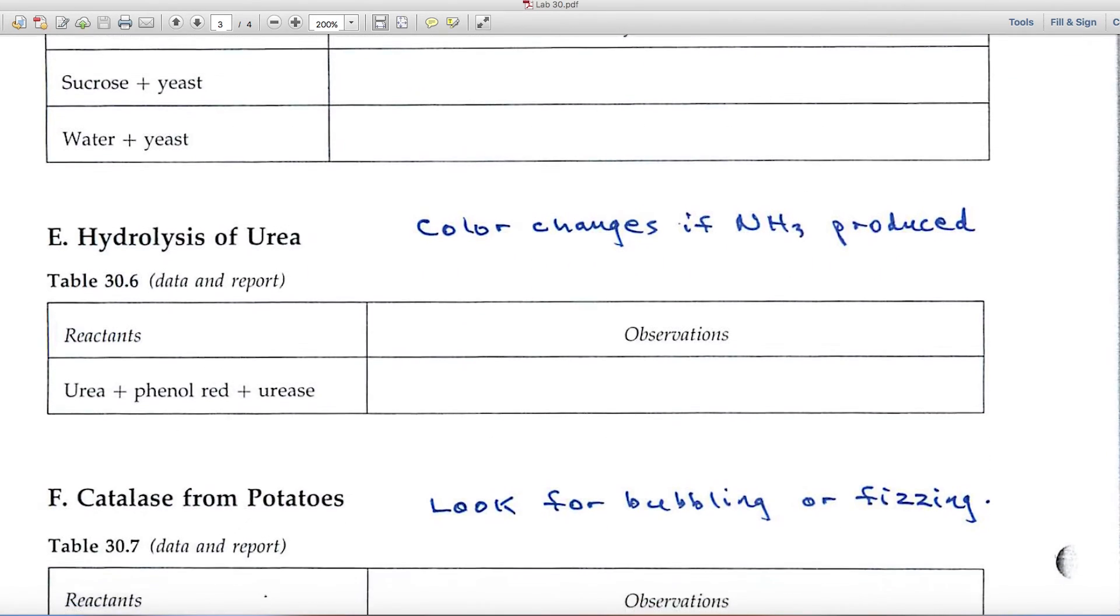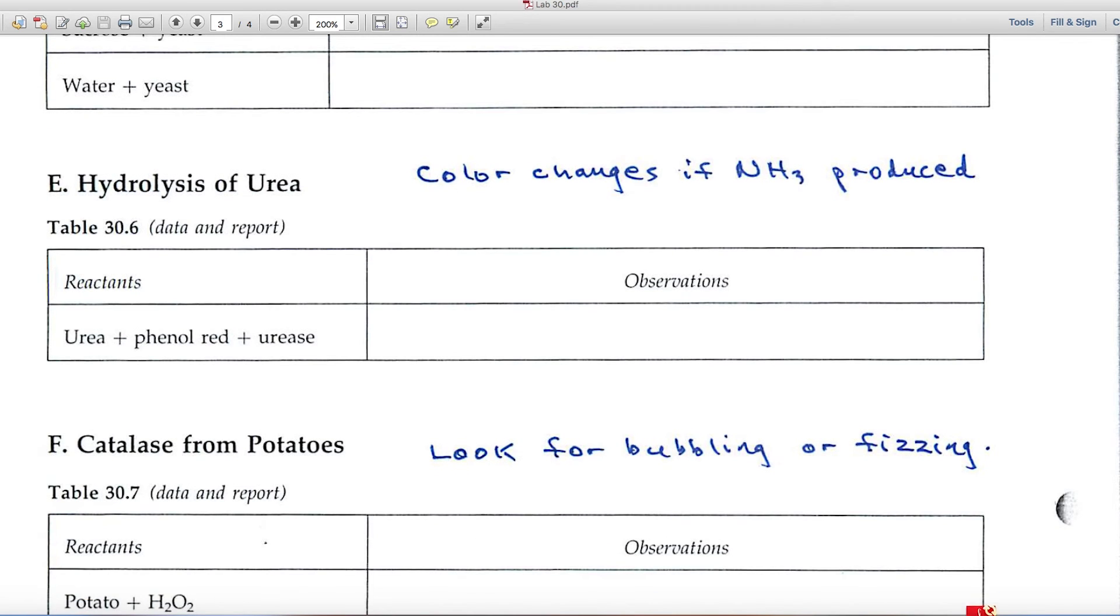Part E deals with the hydrolysis of urea. When urea is hydrolyzed, it releases ammonia. Ammonia is basic; it's going to interact with the indicator and give you a color change.